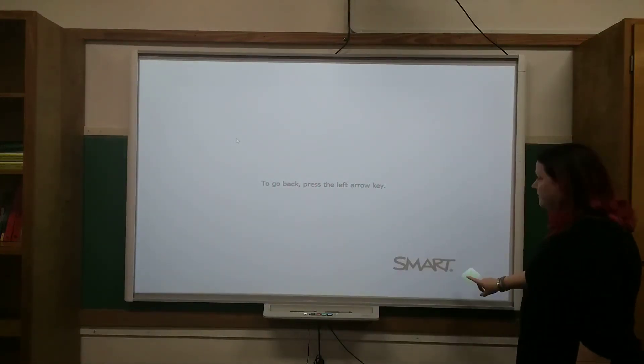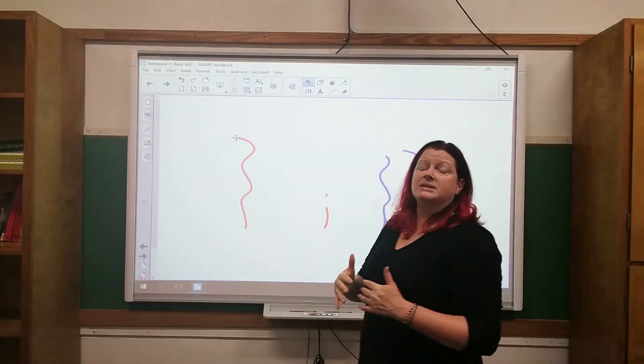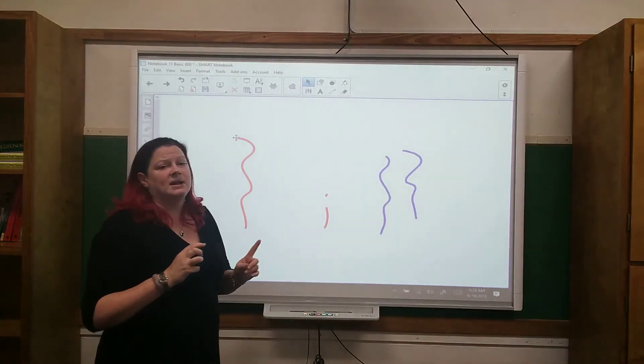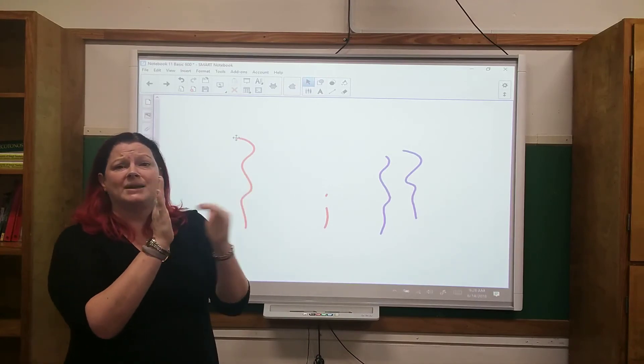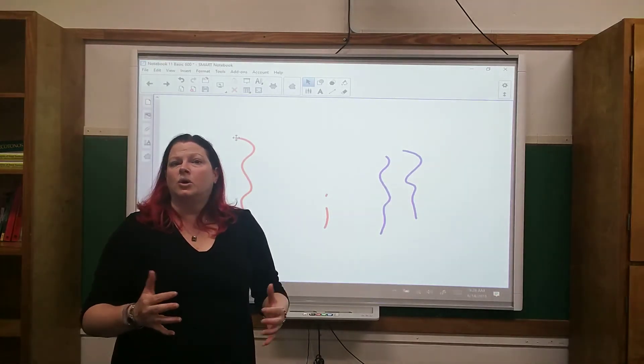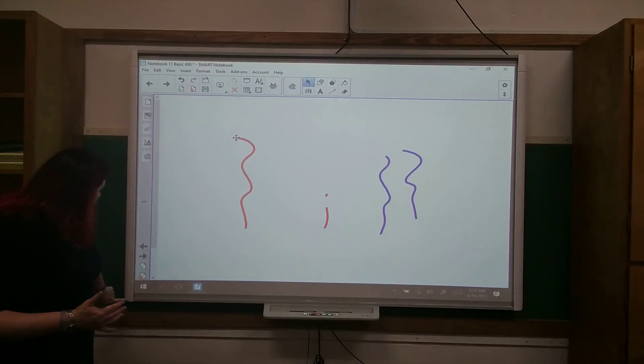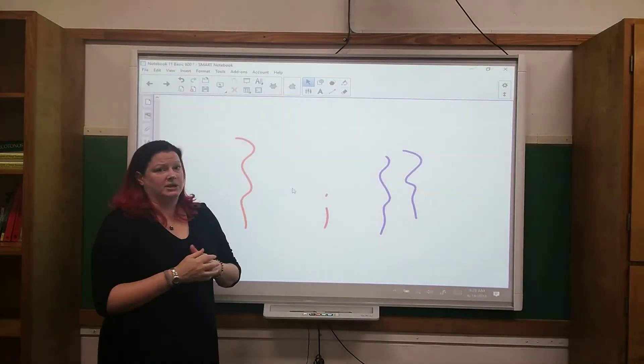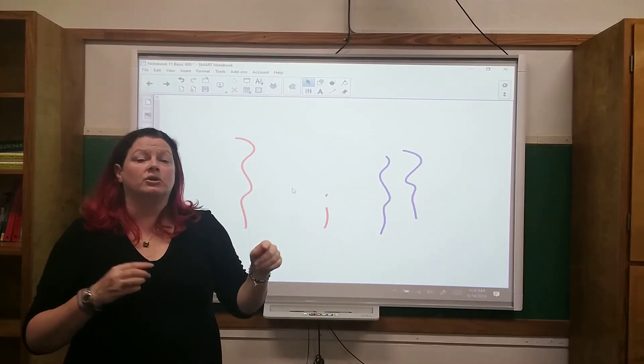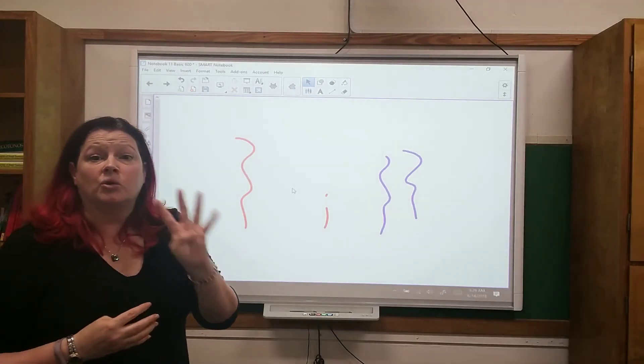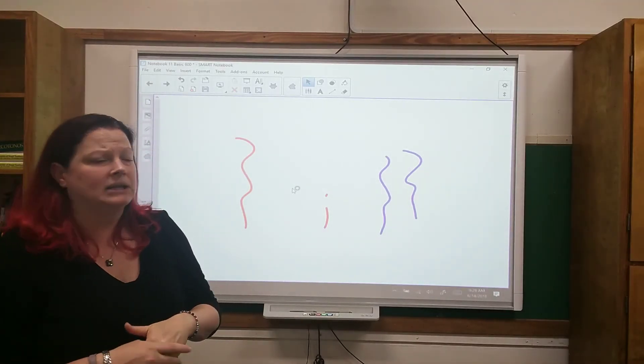One of the biggest differences between this board and the original 600 series board is that this board does not have that resistive technology where you have to press the plastic sheet into the back. This one actually works on DVIT, or a camera technology. In the four corners of the board, there is a camera that looks straight out across the surface of the board here, and every time you touch the board, you're breaking the view of the camera, and it sees that as a touch. So that's why we only need to orient those four corners to tell the camera exactly where the corners are.